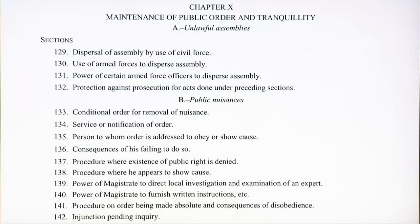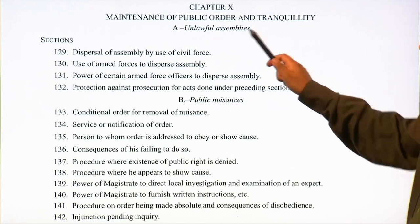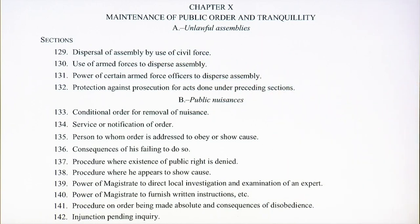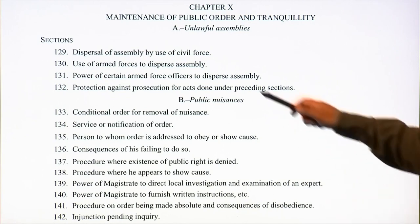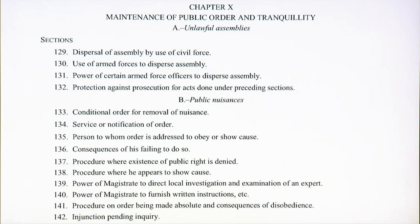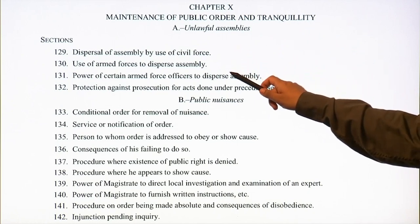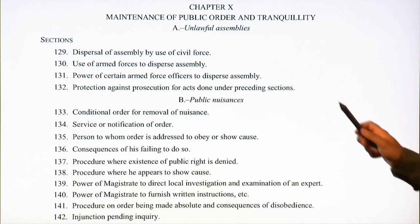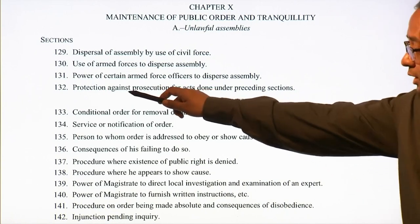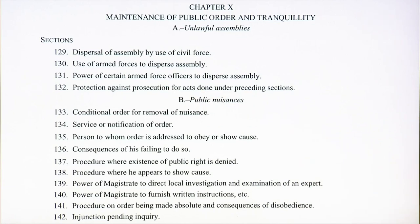Chapter 10 deals with maintenance of public order and tranquility. It covers unlawful assemblies — if there is an unlawful assembly, it can be dispersed by the use of civil force, and then armed forces may also be utilized. First civil force will be used, then the armed forces. It also covers power of certain armed force officers to disperse assembly, and protection against prosecution for acts done under the preceding sections — because when civil or armed forces use force against a large mob, there can be prosecution, so this section provides them with safeguards.